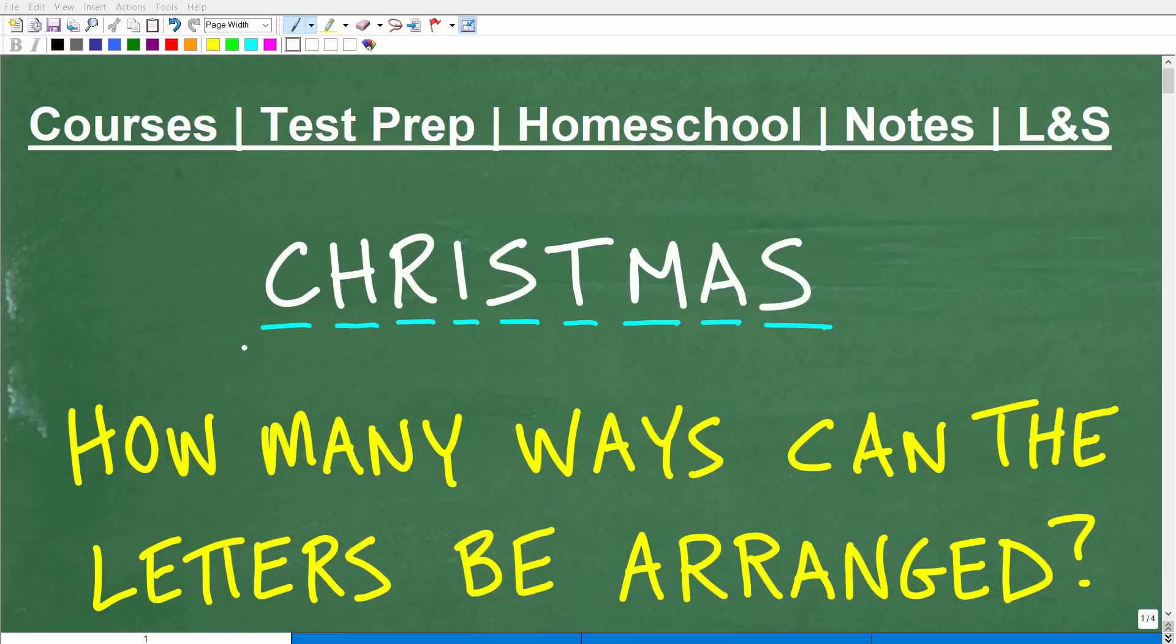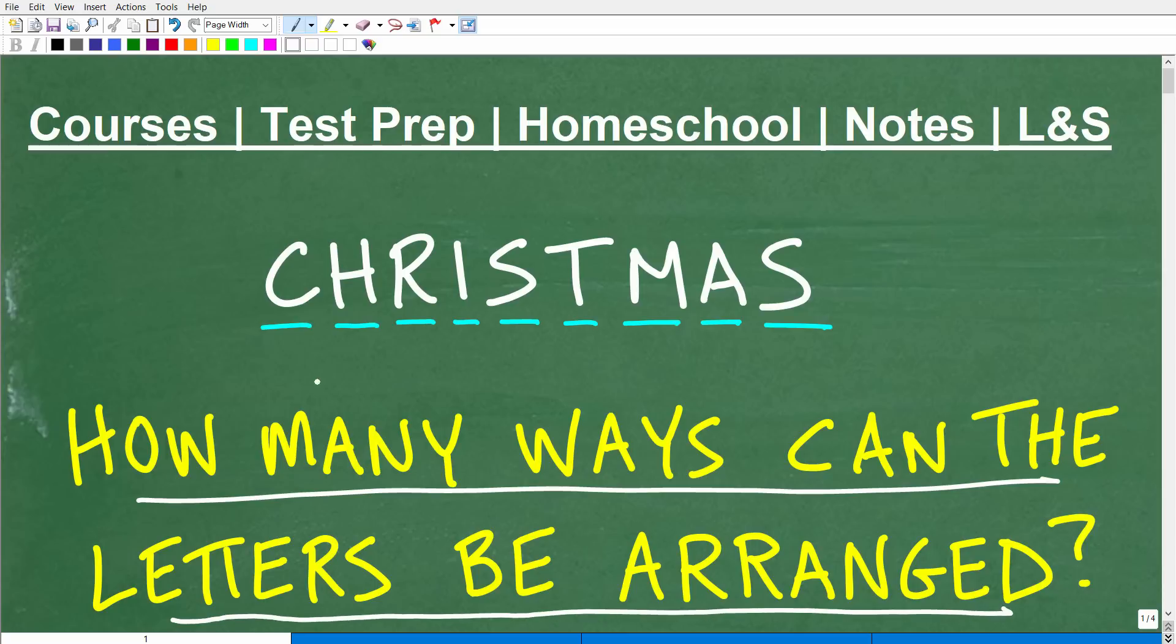So here we have the word Christmas, and we have the letters of the word Christmas underlined. And the question is, how many ways can the letters of the word Christmas be arranged? Okay, so first of all, let's count how many letters we have. We have 1, 2, 3, 4, 5, 6, 7, 8, 9.